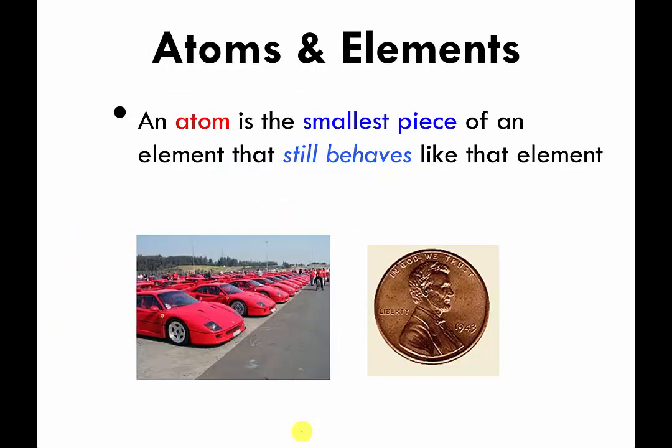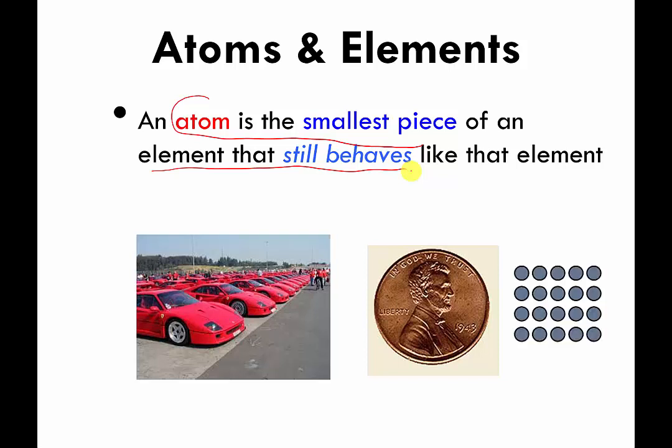One of the other things that he said, and this is where we're going to stop as far as John Dalton is concerned, is he said the atom is the smallest piece of an element that still behaves like that element. So if that doesn't make sense to you, let me try and explain that here. So this is supposed to be a copper penny.